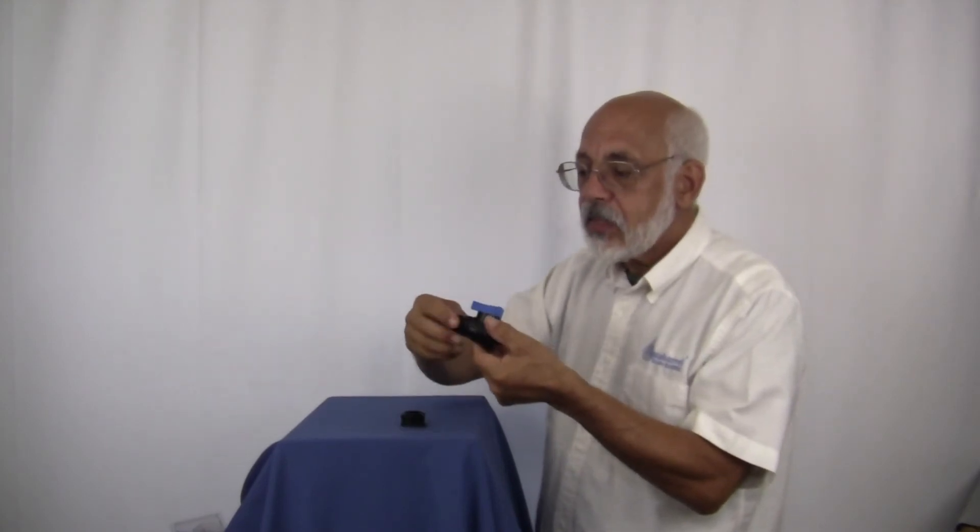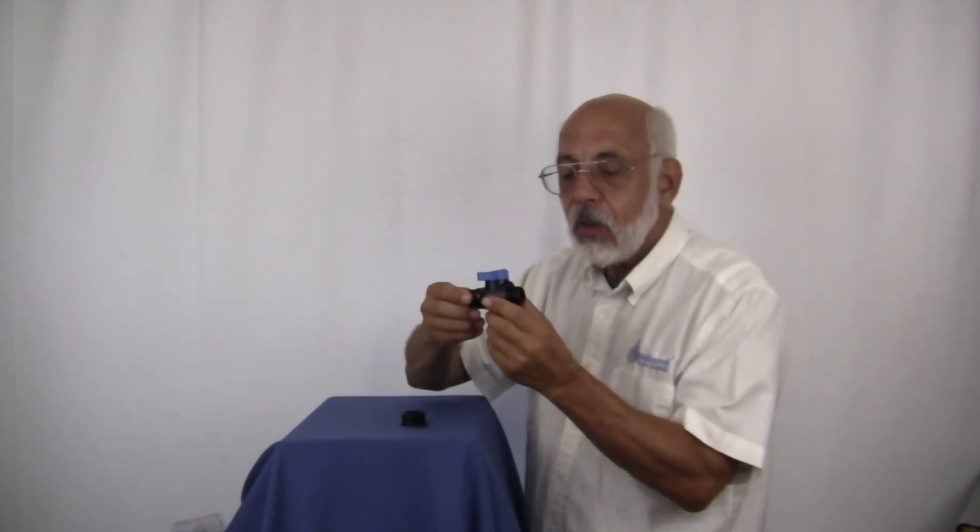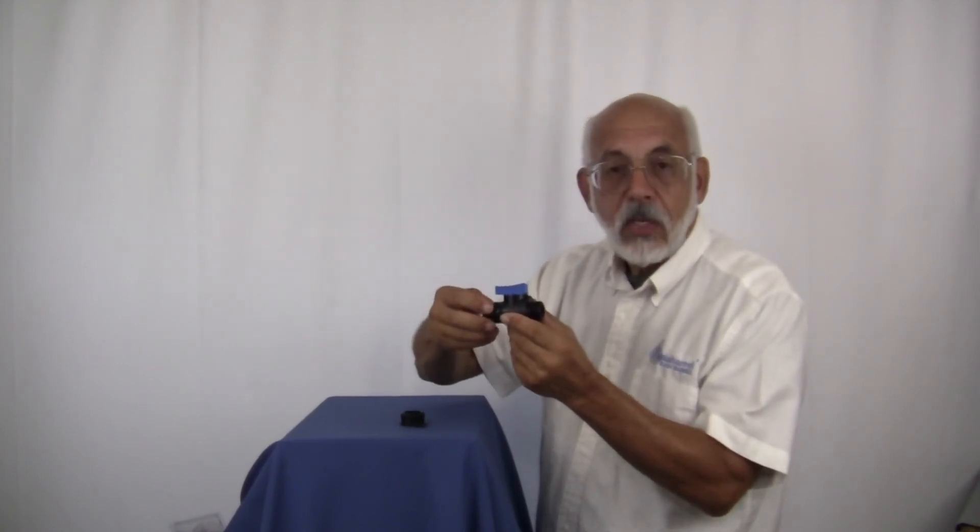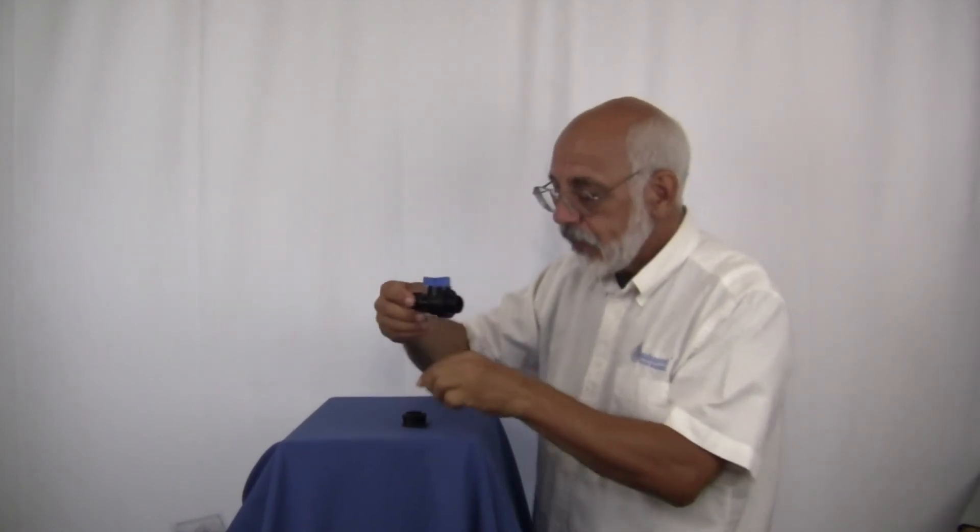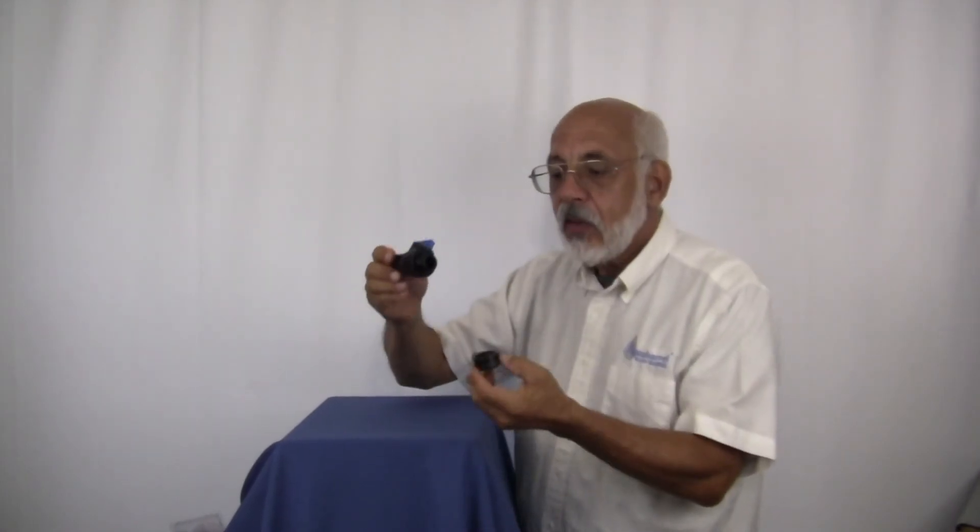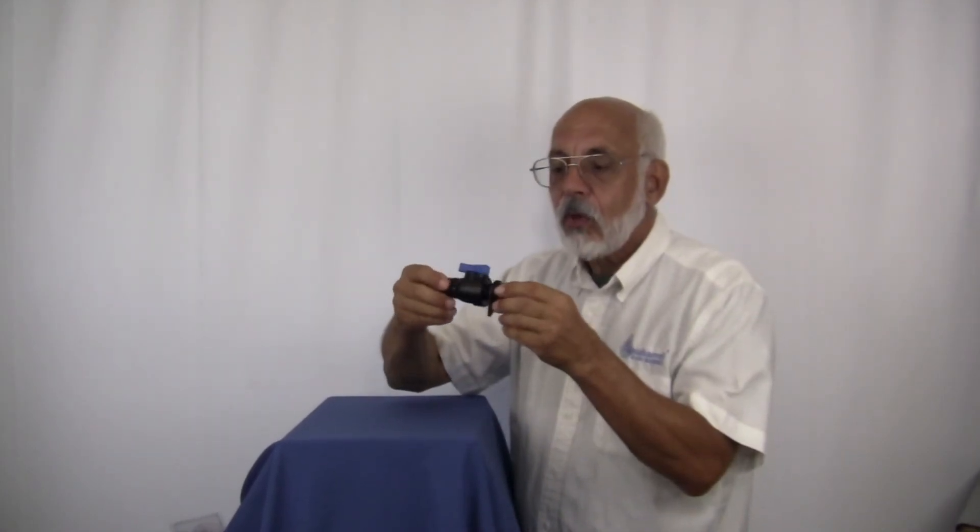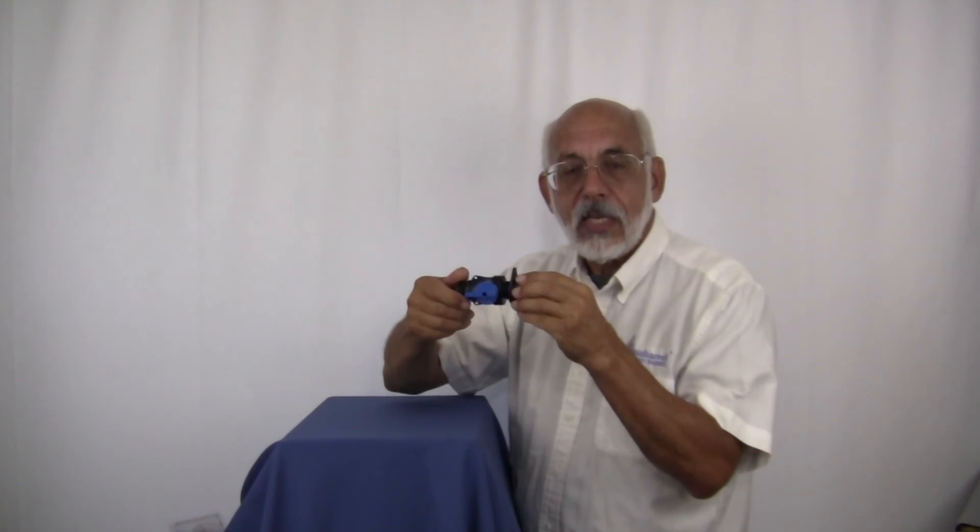Now on the ball valve itself, you'll notice if you look a little more closely that on one side we have threads that are closer together, and on the other side they're farther apart. The ones that are farther apart are going to be the ones that take your garden hose attachment on it, and the other side with the finer threads are going to allow you to screw this into here.